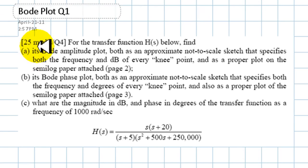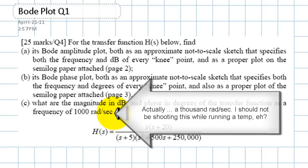This is the first question for 25 marks, equivalent to quiz number 4. For the transfer function H below, find its Bode amplitude plot, both as an approximate not-to-scale sketch that specifies both the frequency and the decibels at every knee, and also as a proper plot on semi-log paper attached. Do also that for the phase plot, and then find what is the magnitude in decibels and the phase in degrees of that transfer function at a frequency of 1000 radians per second. Let's begin with the amplitude.